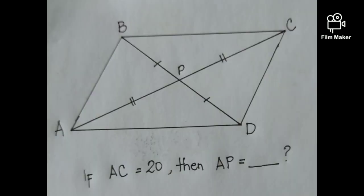For example, this. Diagonal BD bisects diagonal AC. And if AC is equal to 20, then what will be the value of AP? Since we know that AP is congruent to PC, and if AC is equal to 20, then we will just divide 20 by 2. So 20 divided by 2 is equal to 10. So the value of AP is now equal to 10.